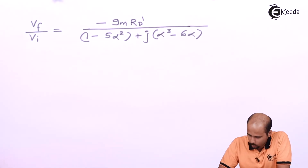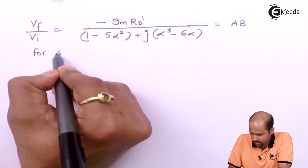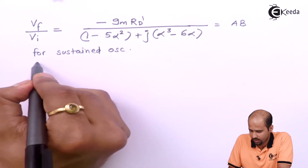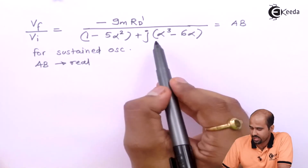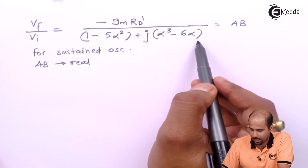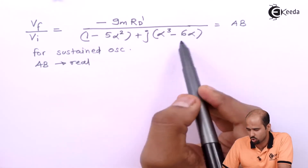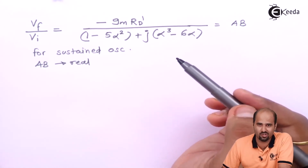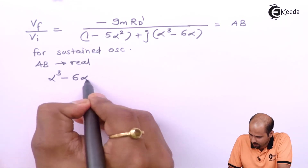The value ratio we have got is nothing but AB. For sustained oscillation, AB should be real. To have AB as a real value, the imaginary part of the denominator will be equated to zero. The numerator part is real, so real divided by imaginary is imaginary — I have to take the imaginary part equal to zero. If AB is real, then alpha-cubed minus 6·alpha equals zero.